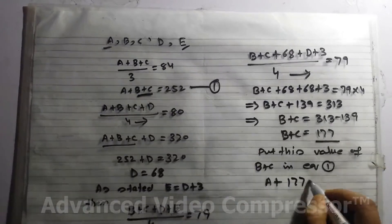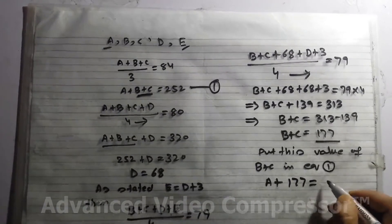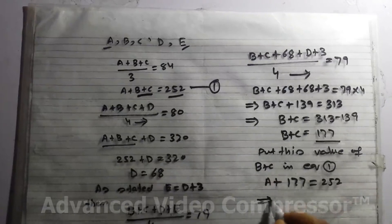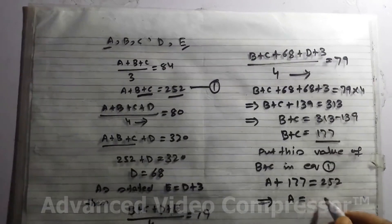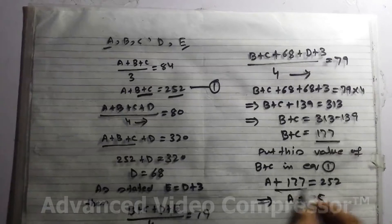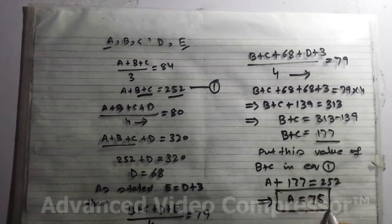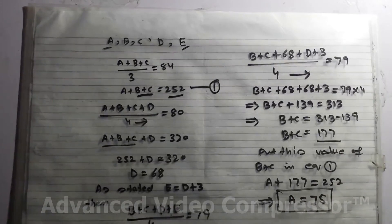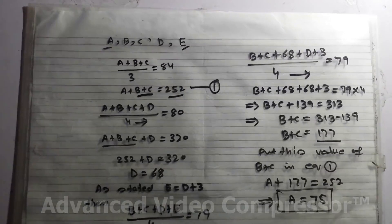This gives A = 75. So friends, this is the end of the problem, we have found the weight of A. Let's see you in the next problem. Anybody who has not yet subscribed should subscribe to my channel. Thank you very much, let's see in the next problem.